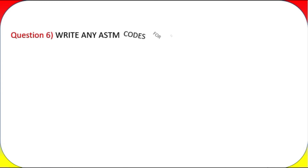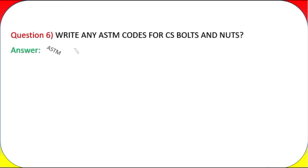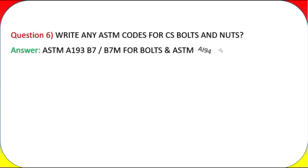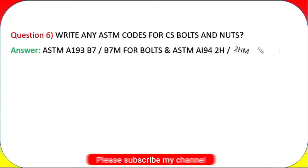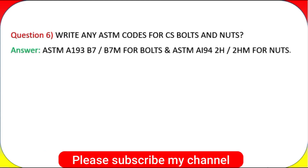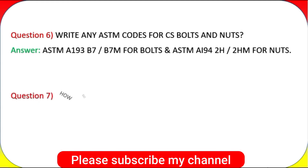Question 6: Write any ASTM codes for CS bolts and nuts. Answer: ASTM A193 B7/B7M for bolts and ASTM A194 for nuts.